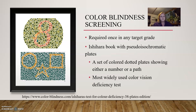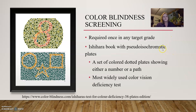Color blindness screenings are also only required once in any target grade. The most commonly used tool is the Ishihara book with pseudo-isochromatic plates — sets of colored dotted plates showing either a number or a path for the student to follow with a Q-tip. It is the most widely used color vision deficiency test. We also use these in hospitals to check staff and nurses so they can properly assess hemoccult or gastrocult tests and identify color-coded equipment.